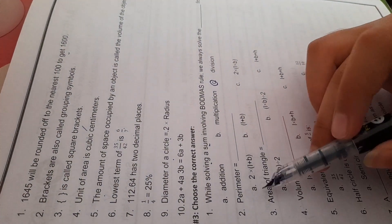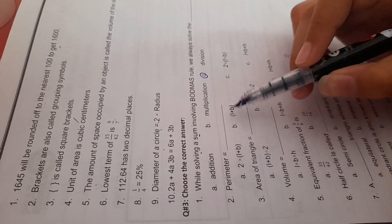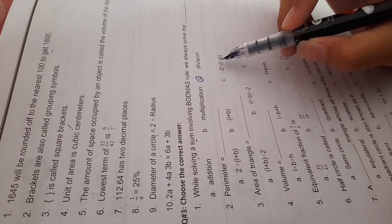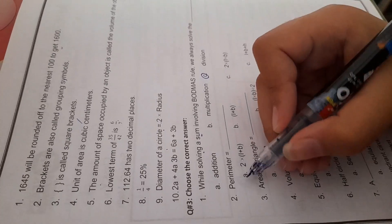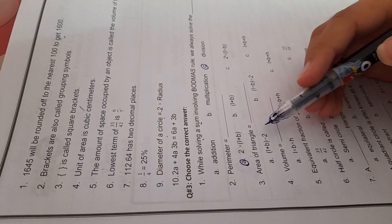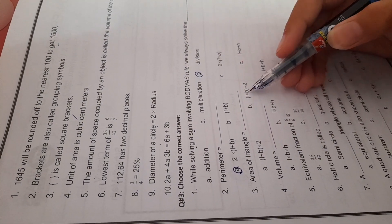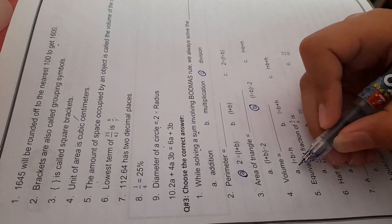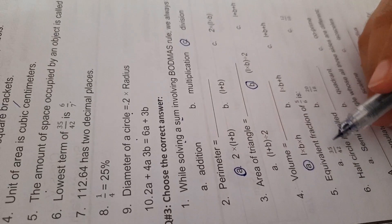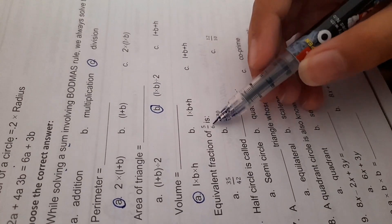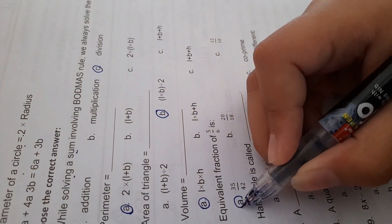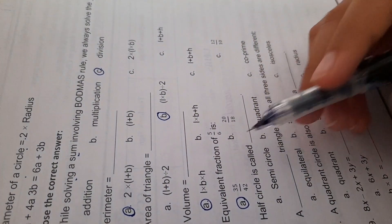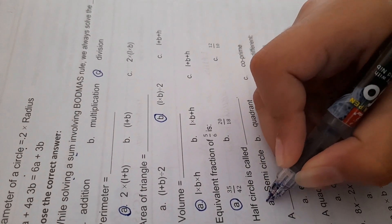Perimeter equals 2 multiplied by length plus breadth. Area of triangle is length multiplied by breadth divided by 2. Volume equals length multiplied by breadth multiplied by height. Equivalent fraction of 5 by 6 is 32 by 42.